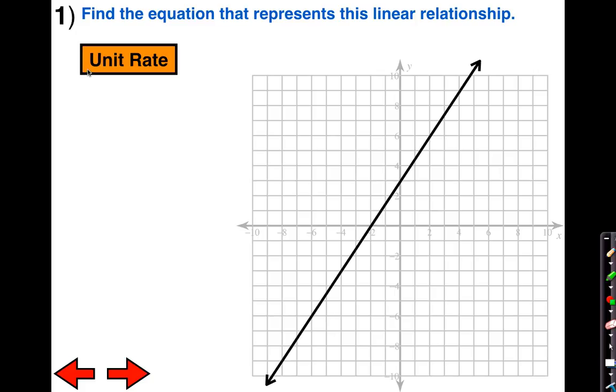The way we find a unit rate is we first have to identify at least two points, because that's all it really takes. I'm going to identify this point here and another point here. Notice I picked nice, perfect ordered pairs that occur at an intersection.